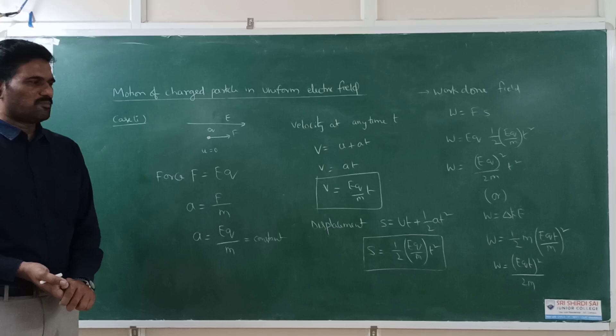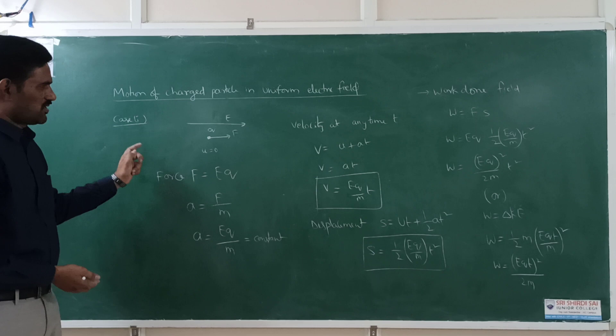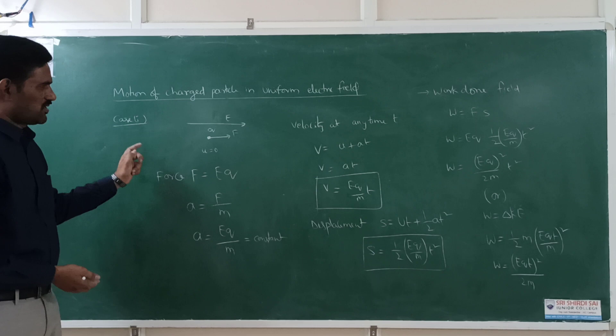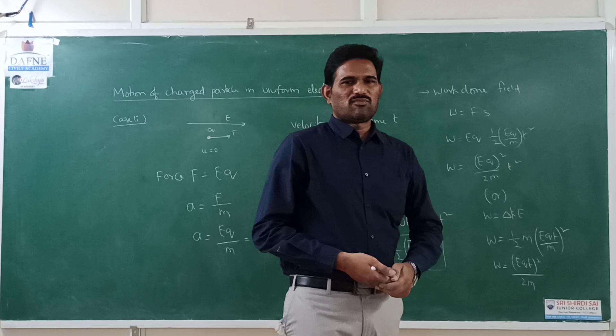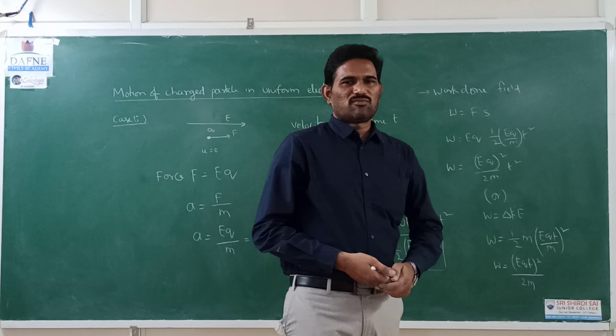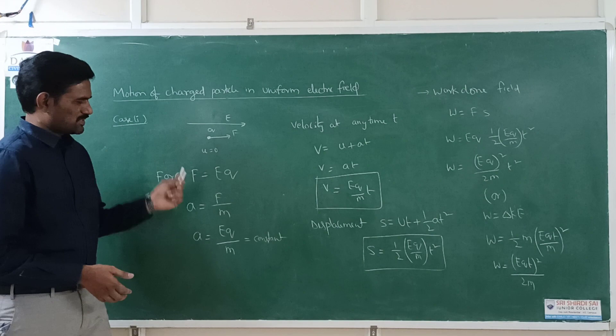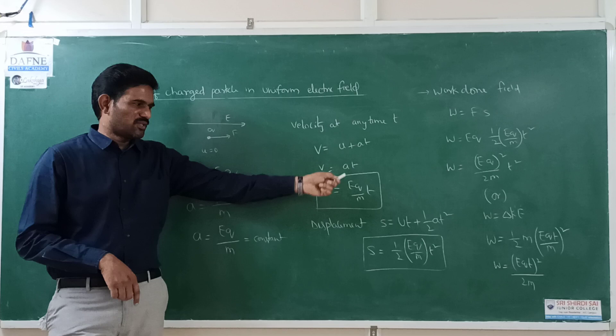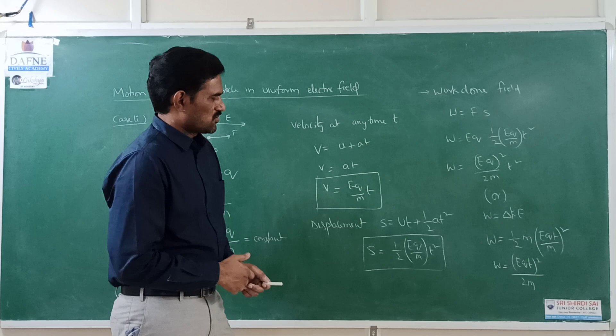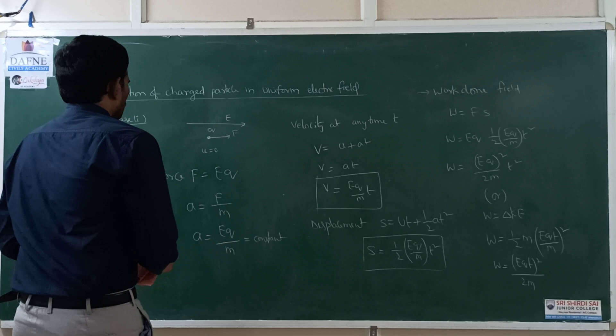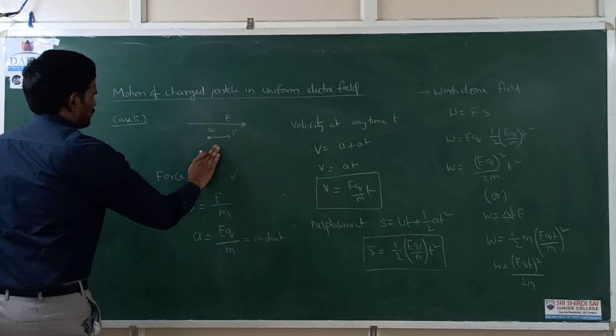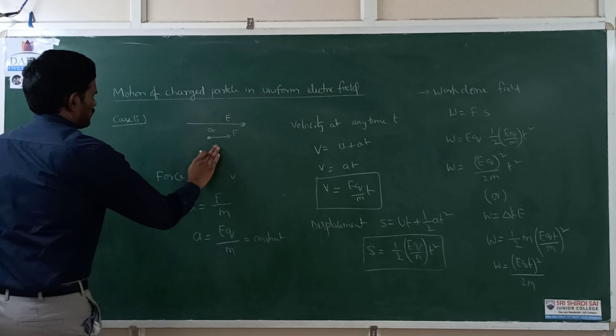That is the simple case when the particle is released from rest in a uniform electric field. Now, if the particle is already projected with some initial velocity in the direction of the electric field, the same calculations apply, but u is not zero — we include an initial velocity u₀. That is the only change in those equations.